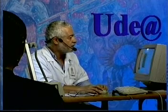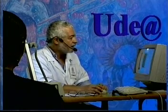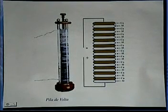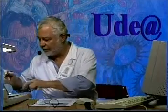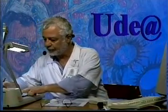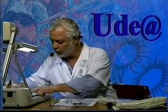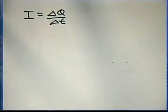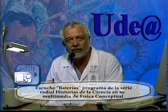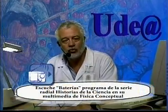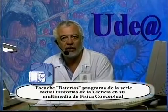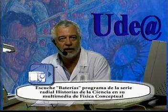Estamos hablando continuamente del desplazamiento de cargas eléctricas, y entonces es importante definir una magnitud física asociada a ese desplazamiento. Definamos la corriente eléctrica: en términos de la conducción eléctrica, la corriente eléctrica es la variación de la carga eléctrica por unidad de tiempo. Una propiedad de la electricidad es que puede viajar a través de aquellos elementos que permitan su flujo, que tengan mayor o menor grado de conductividad eléctrica.